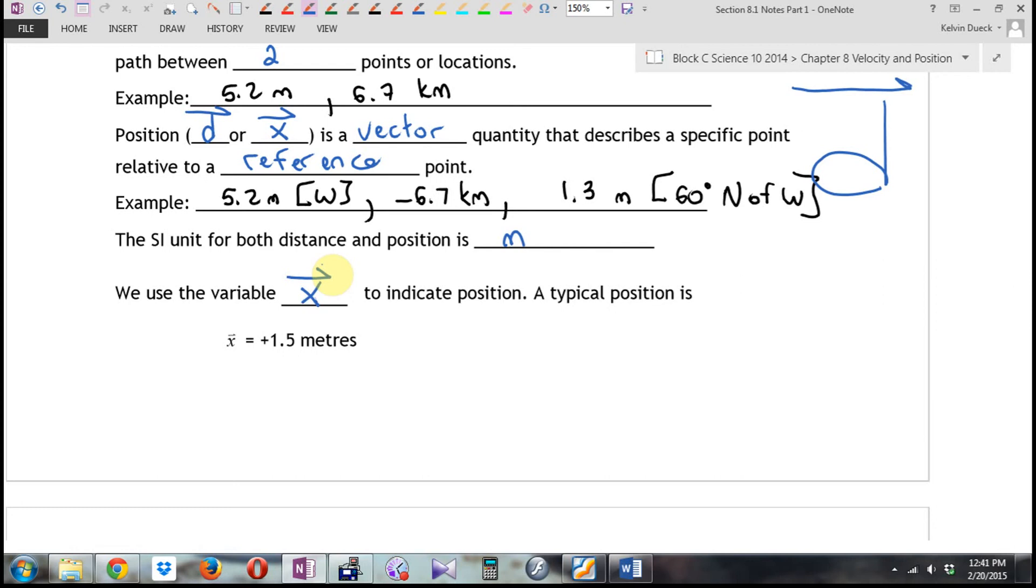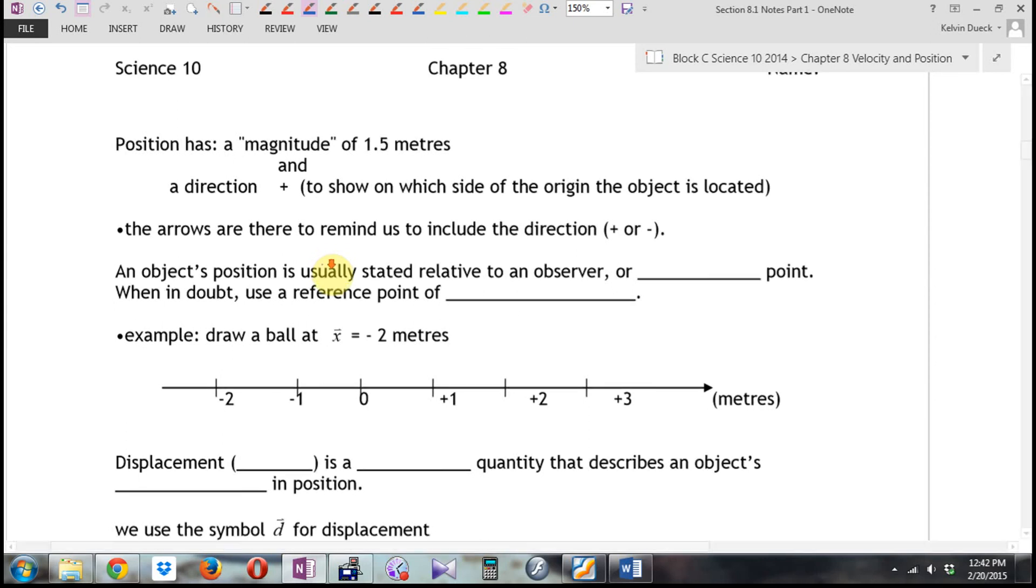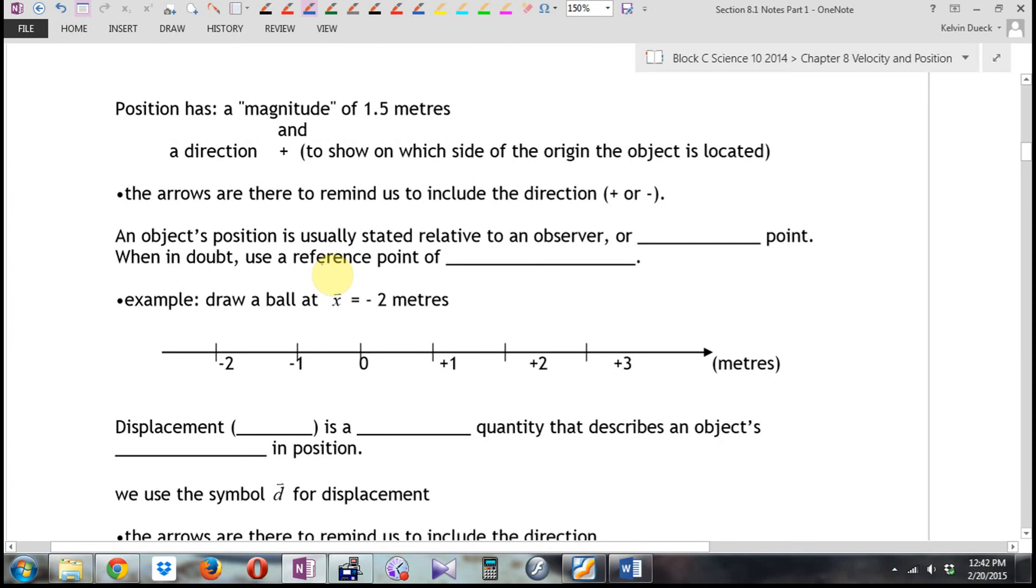So, we often use the variable X with a vector bar to indicate position. A typical position could be positive 1.5 meters. By putting that positive in front, I'm saying you went to the right or east or up. I'd need to know more information, but once you gave me the context, I could tell you what direction we went from where we started. What if it had been negative? That would be to the left or down or backwards. Again, I need more information, but this is an easy way. So, we'll either indicate direction with pluses and minuses, or if the question clearly includes north, south, east, and west, then we'll use north, south, east, and west.